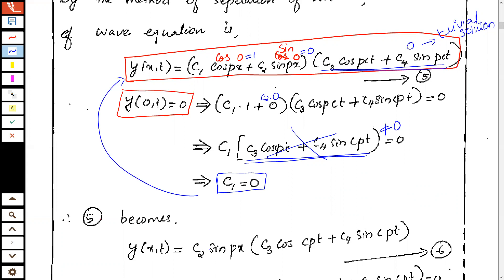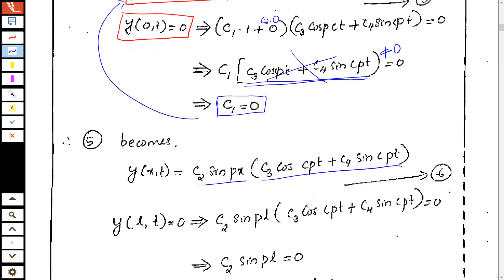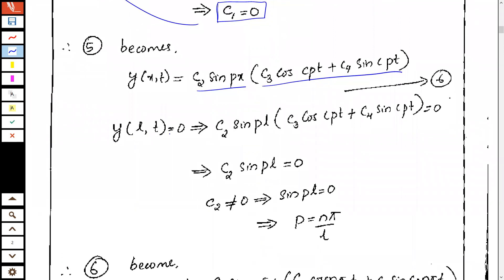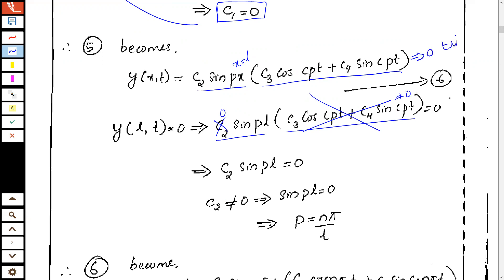With c₁=0, the solution reduces to y(x,t) = c₂sin(px)·(c₃cos(pct) + c₄sin(pct)). Applying the second boundary condition y(L,t)=0, we substitute x=L to get c₂sin(pL)·(c₃cos(pct) + c₄sin(pct))=0. The time factor cannot be zero, and c₂ cannot be zero either since that would again lead to a trivial solution.